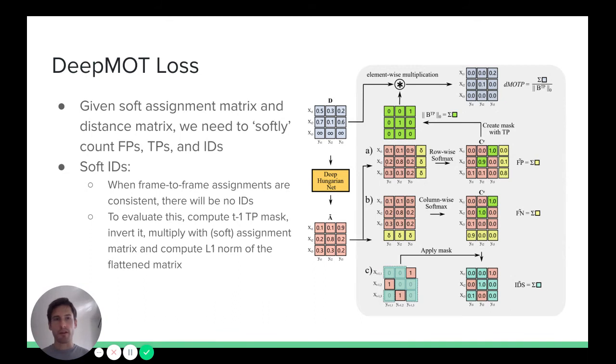You can imagine that if assignments are below some threshold, then we either have false positive or false negative. This means that if certain track X doesn't have a match in the set of ground truth objects Y, then we have a false positive. On the other hand, if certain ground truth object Y doesn't match any track, then we miss the target and we have a false negative.